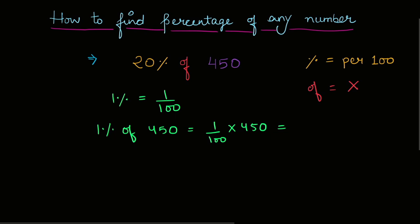Here, jo numerator mein zero hai, wo denominator ke zero ke saath cut ho jayega. Toh kya bacha? Forty five upon ten. Toh forty five upon ten ko main likh sakti hai, four point five.